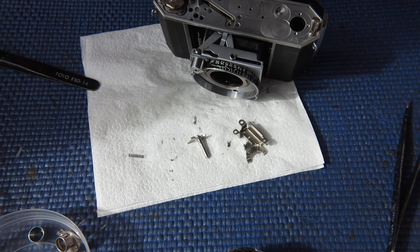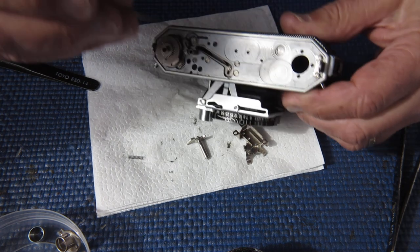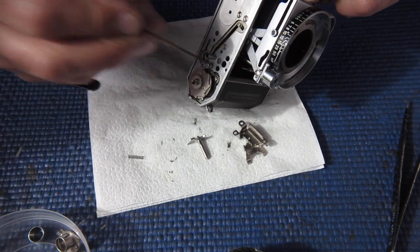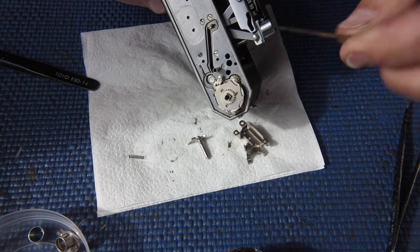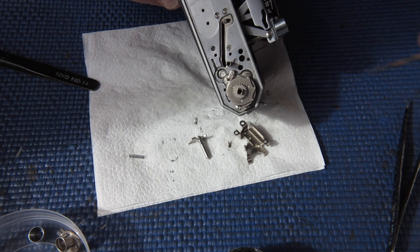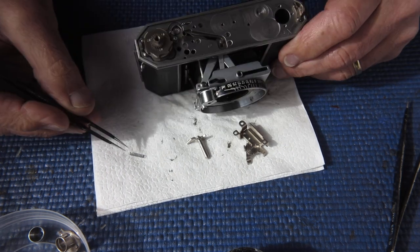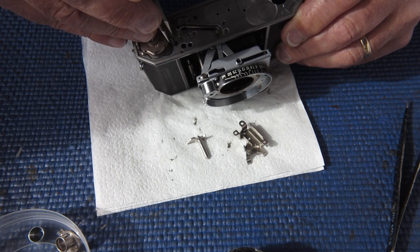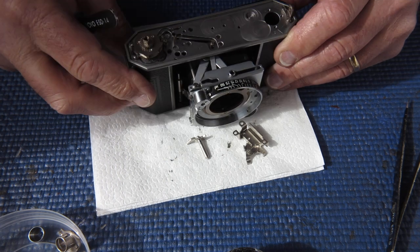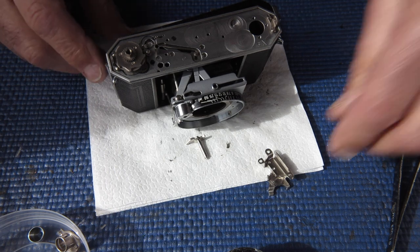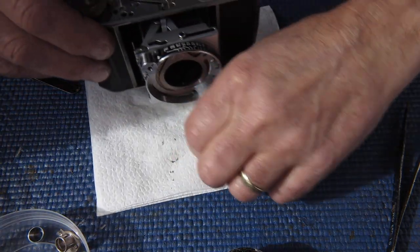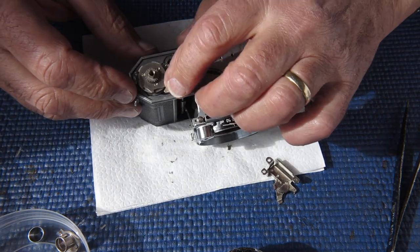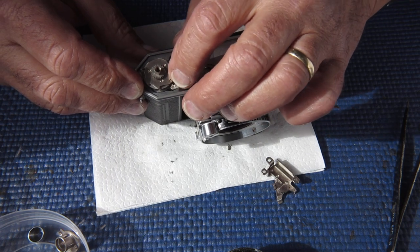So I'm just going to put a tiny smear of molybdenum grease down that hole, that's where the lock lever goes. We'll drop our spring down there. Take our lock lever, pop that into position, make sure it moves up and down smoothly, no catching.